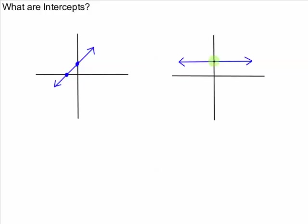This line has a single y-intercept and no x-intercepts. In this graph, if this pattern continues forever to the left and the right, you can imagine that there are an infinite number of x-intercepts.